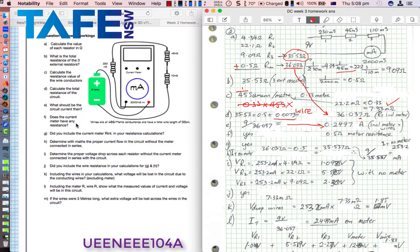Question F, does the current meter have any resistance? Of course yes, and I had solved that earlier on. That was 0.5 ohms and I did guess we were going to be asked something about that down the track.